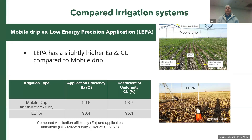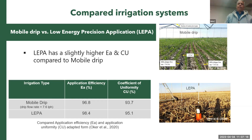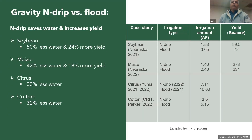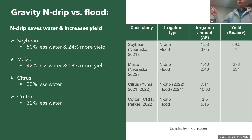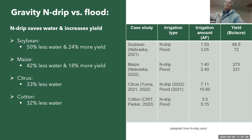Comparing the LEPA system with mobile drip, there is no significant difference in application efficiency or coefficient of uniformity. Data provided by N Drip Company shows a good reduction in water use with higher yield achieved under lower water application.